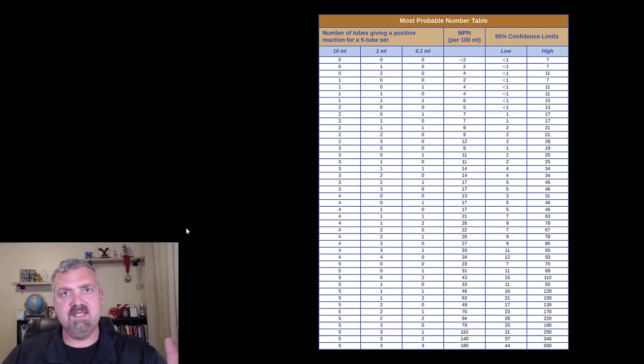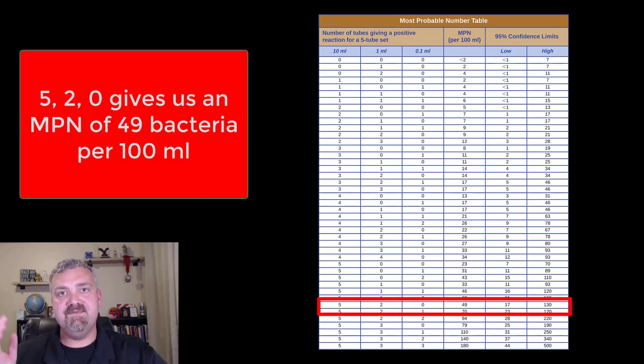Let's go ahead and find ours. So ours was, I'll do the remembering for you, it was 5-2-0. You come down here and you see of the 10-milliliter tubes, five of them were positive; one-milliliter tubes, two of them were positive; 0.1-milliliter tubes, zero of them were positive.